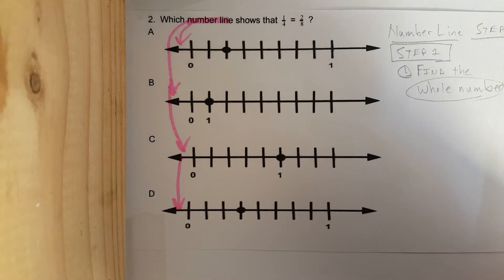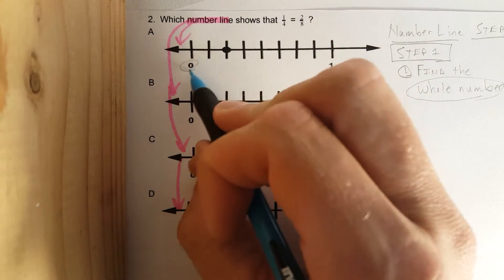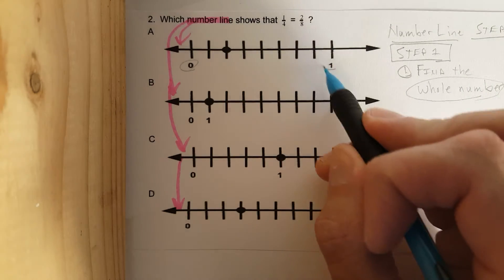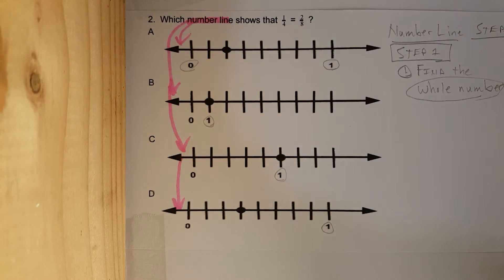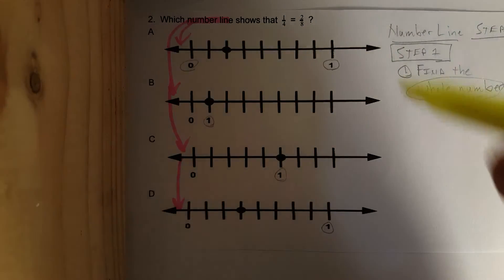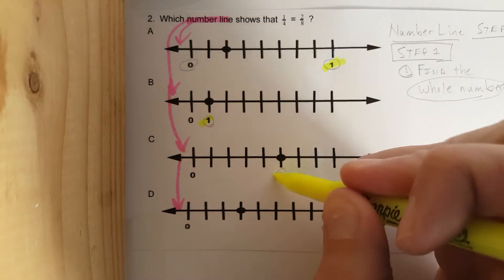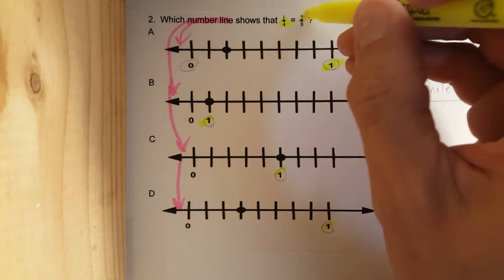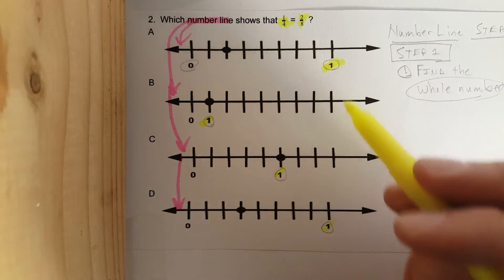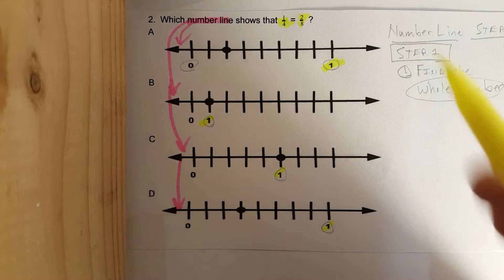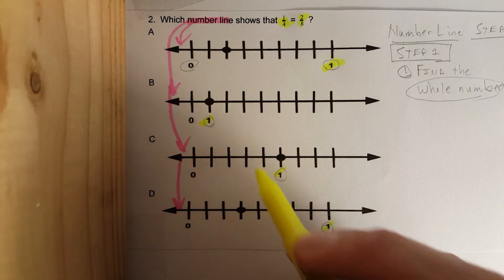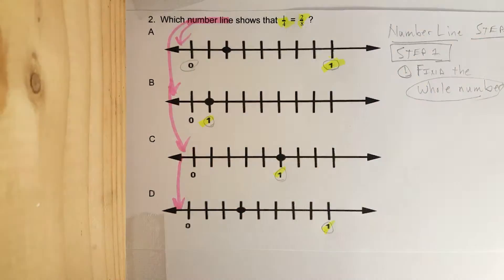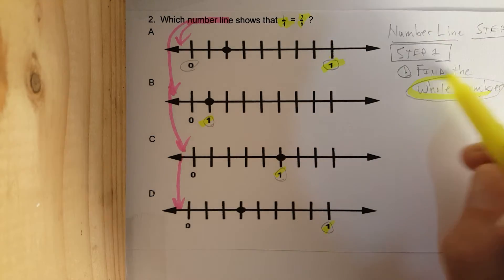Circle it. I see whole number zero, whole number one — but notice the ones are all in different spots on each number line. That immediately tells you every single one of these number lines is different. Wait — the one is here and here, so B and C are already different from A and D.